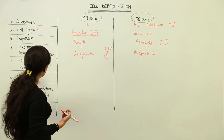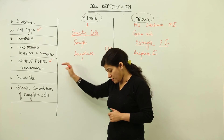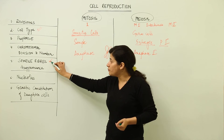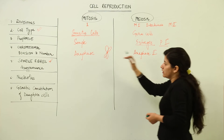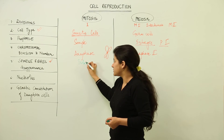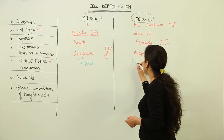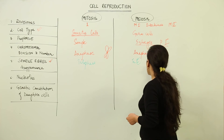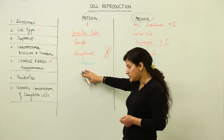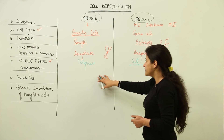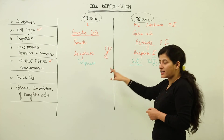Then we talk about spindle fiber disappearance. Spindle fibers are present during metaphase and active during anaphase, and they disappear during telophase. In mitosis, they completely disappear during telophase. In meiosis, there is telophase one and telophase two. The spindle fibers do not completely disappear in telophase one — complete disappearance takes place in telophase two of meiosis. That is one important point of difference.